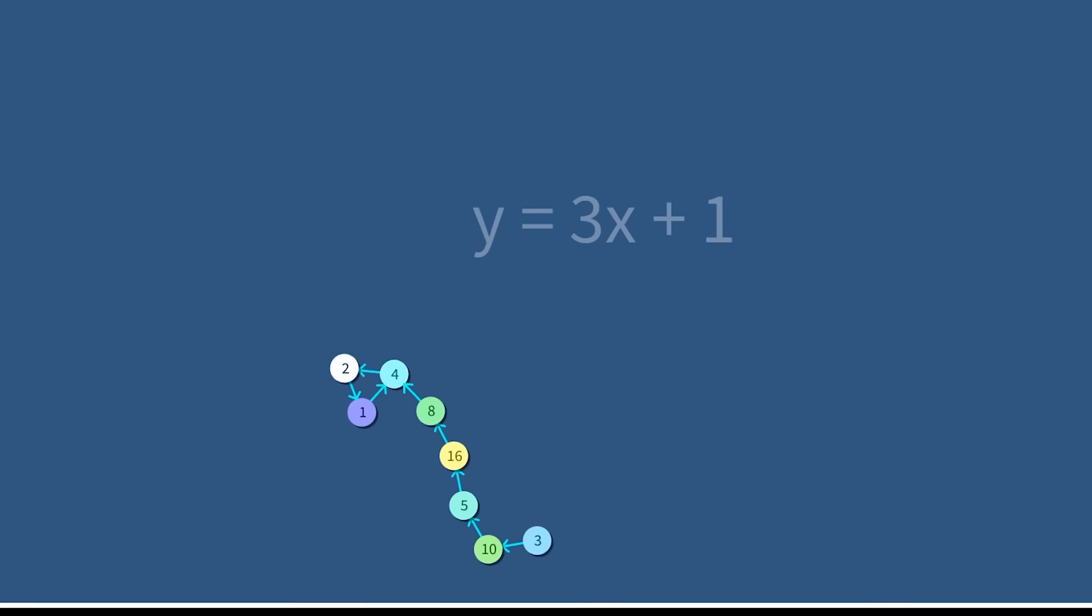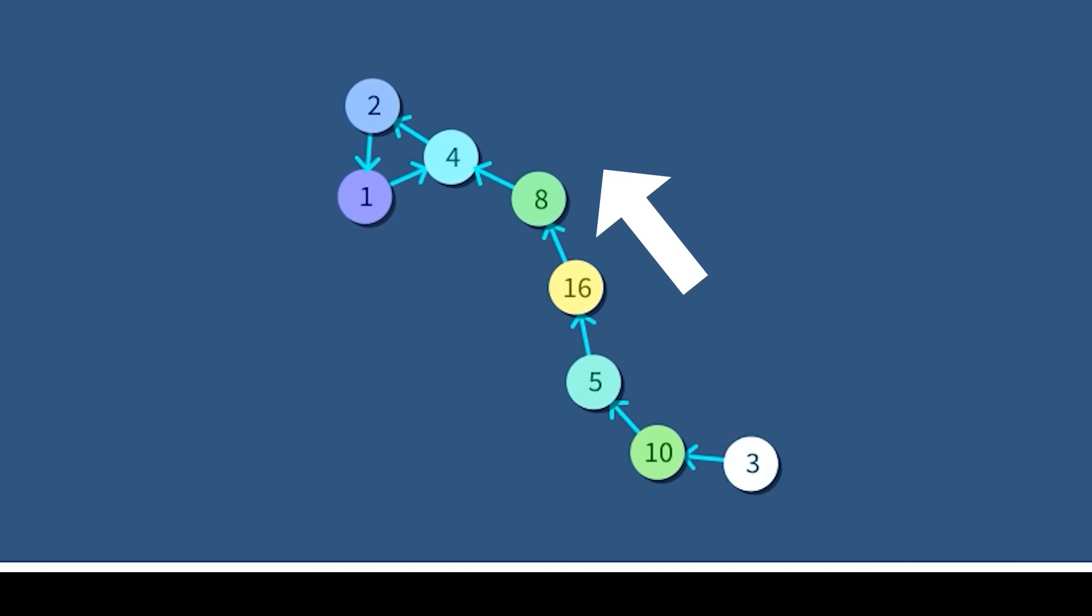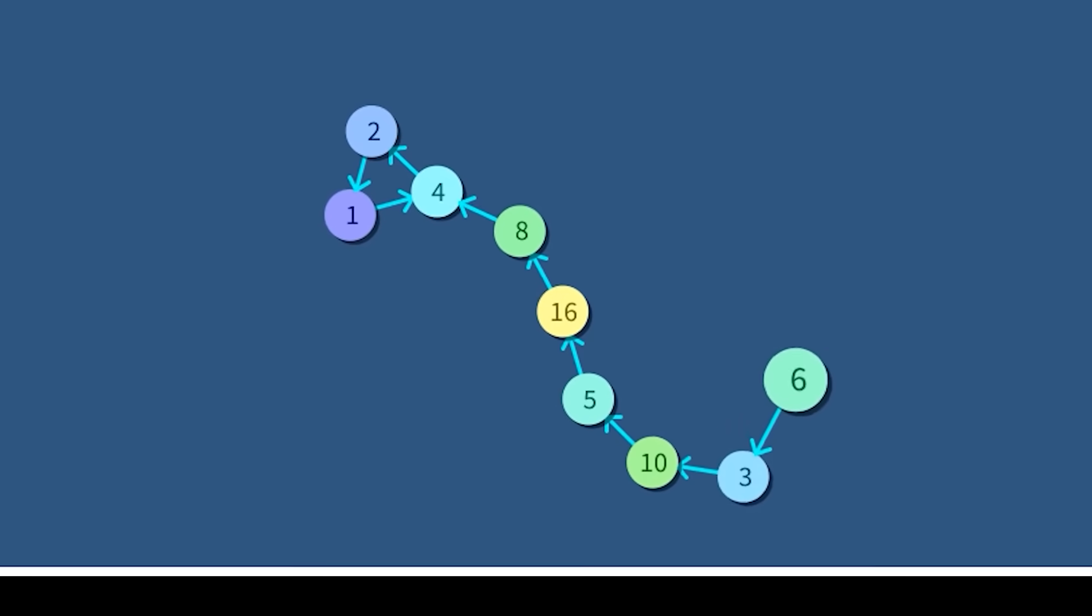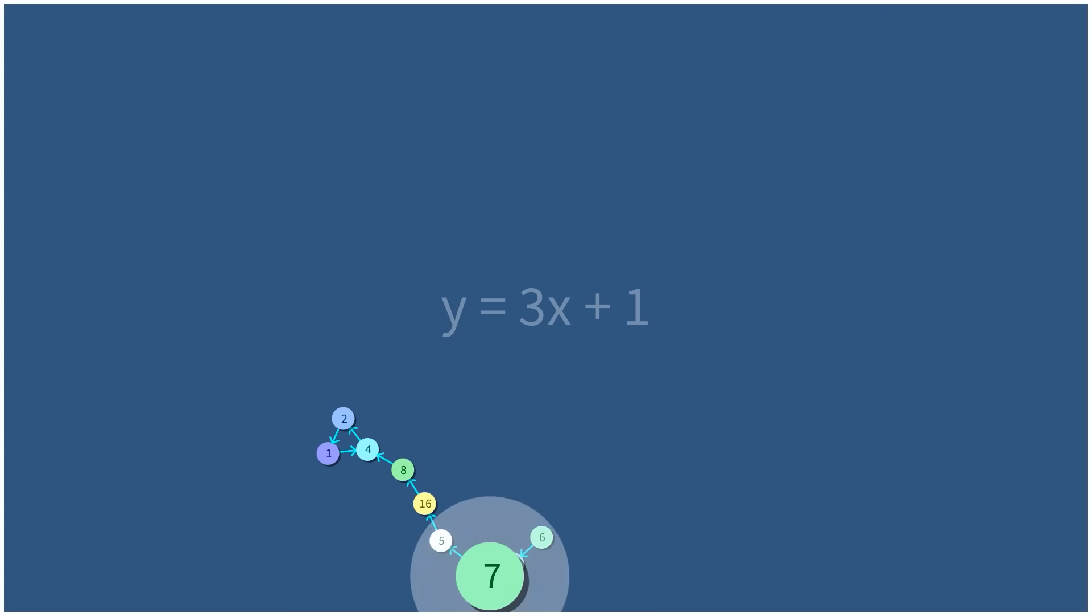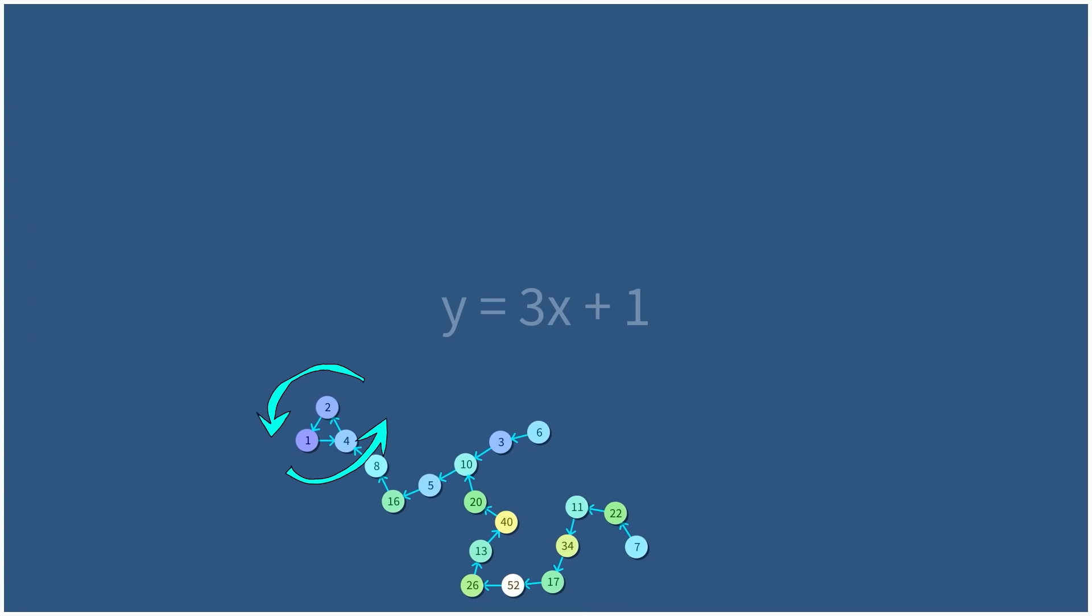What you're watching now is a visualization of the path each integer takes as you repeat this process over and over. We are incrementally adding higher and higher numbers to this graph, and what you might notice is that every number so far falls into the 421421 orbit.